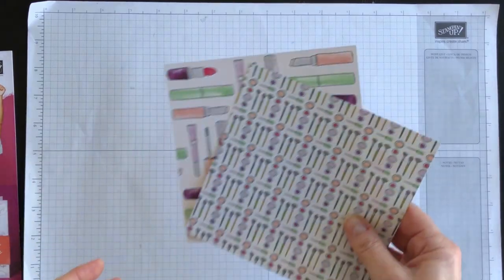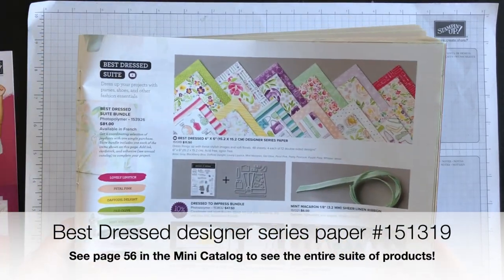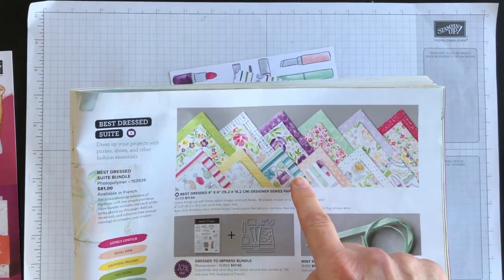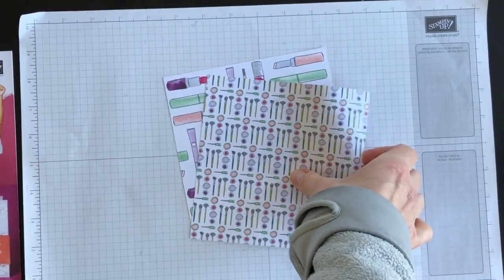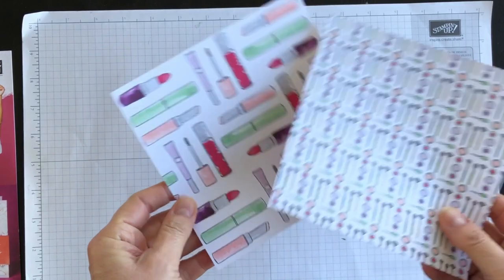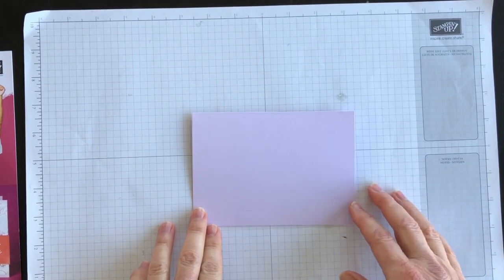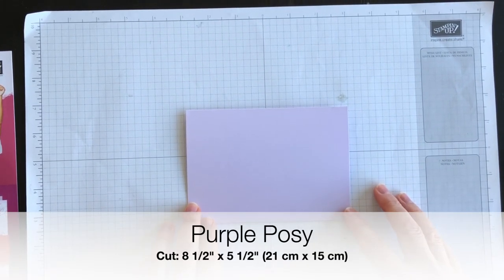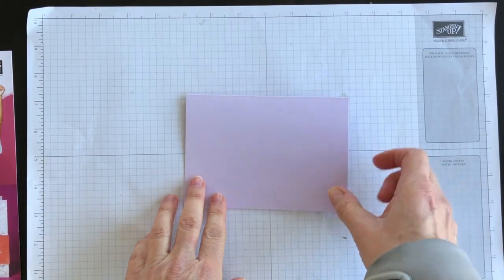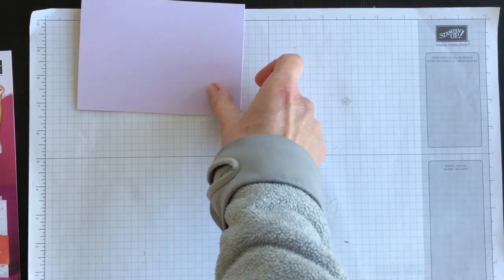I am also going to use a piece of the Best Dressed Designer Series paper. It's in the mini catalog on page 55, and the reason that I chose one of the designs in this paper is because the design that I've chosen uses Purple Posy, and Purple Posy is going to be the card base for my project this week. I've cut it 8½ by 5½ and scored it on the 4¼ mark, and it's going to be a landscape layout.